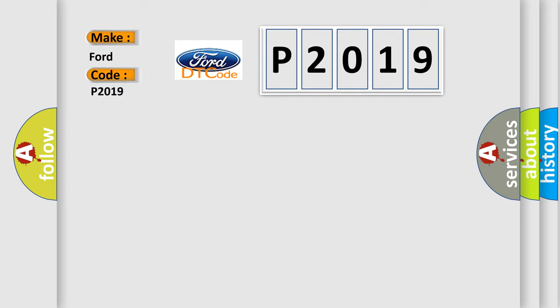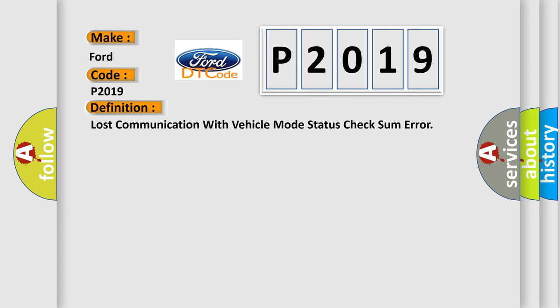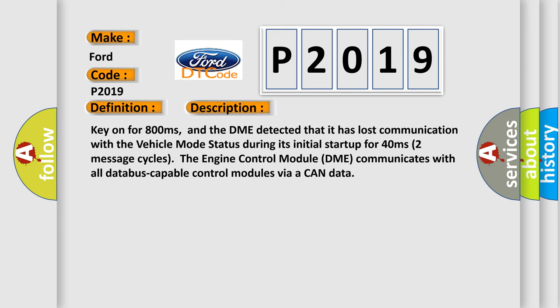Infinity car manufacturers. The basic definition is: lost communication with vehicle mode status check some error. Key on for 800 milliseconds, and the DME detected that it has lost communication with the vehicle mode status during its initial startup for 40 milliseconds — two message cycles. The engine control module DME communicates with all data bus capable control modules via a CAN data bus.